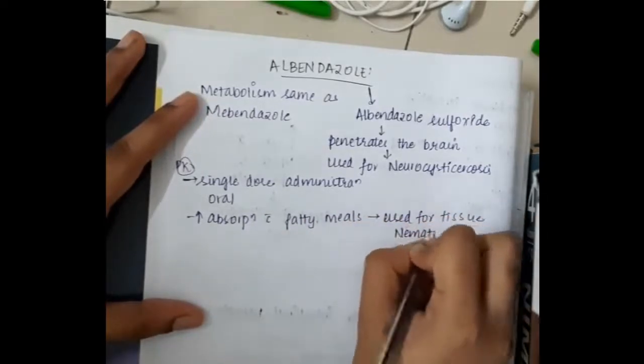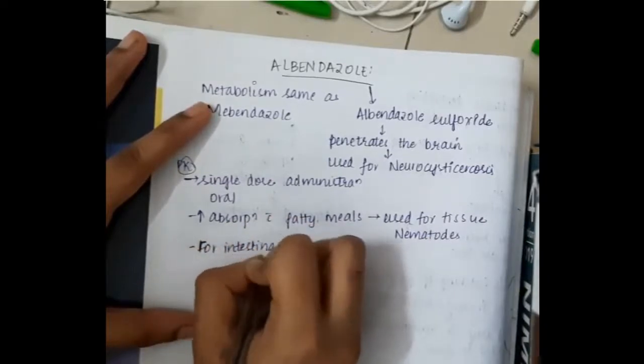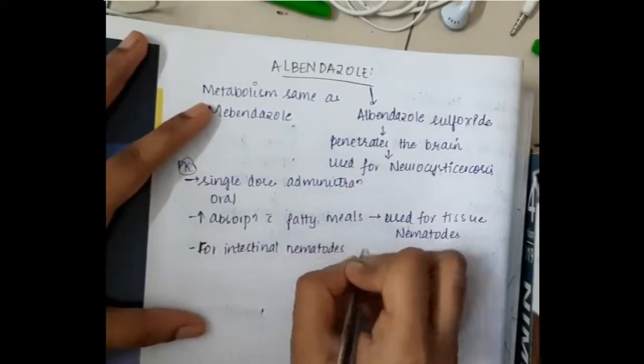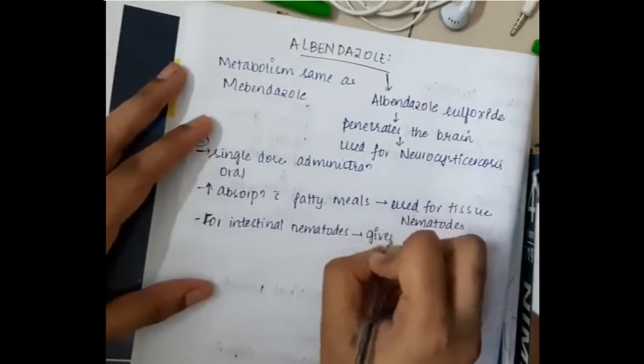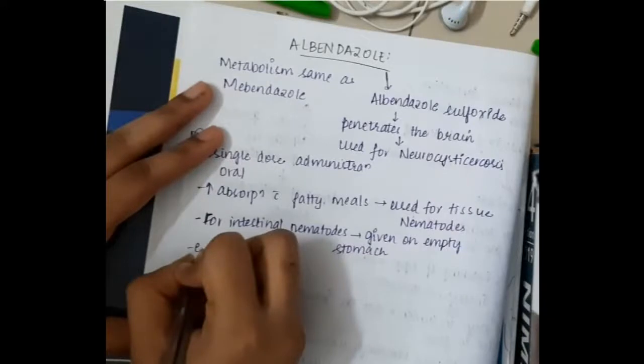It is used mainly for tissue nematodes. For intestinal nematodes it should be given on empty stomach. If you wanted to use this albendazole for tissue nematodes, then you will have to ask the patient to take it after meals. Because only after meals, that is after taking fatty meals, this albendazole gets absorbed into the bloodstream and thus it can go to the tissues.